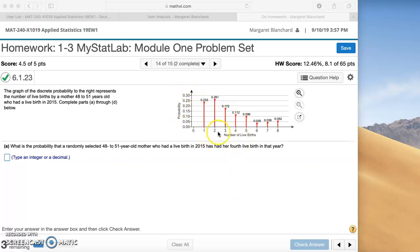Here we have on the x-axis the number of live births, zero through eight. And on the y-axis we have our probabilities. The probability of one live birth is 0.233. That's how you would read this probability plot.